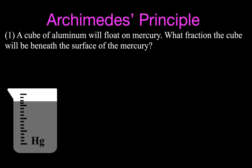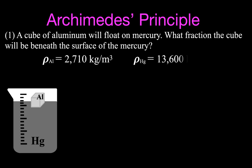We are going to do three different problems involving floating objects. In the first example, we are going to have a cube of aluminum that is floating on mercury. Mercury is a metal, but at room temperature mercury is a liquid. We want to know what fraction of the cube of aluminum will be beneath the surface of the mercury.